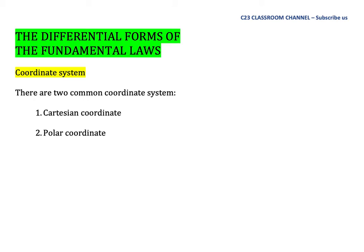We have two common coordinate systems and we will discuss both systems here. The first coordinate is the Cartesian coordinate. This is a very common coordinate. You already know about the Cartesian coordinate, and the other coordinate that we need to know is the polar coordinate.